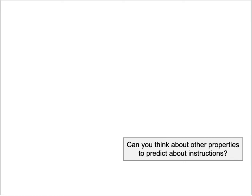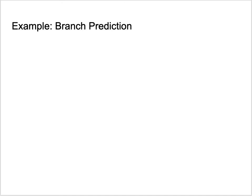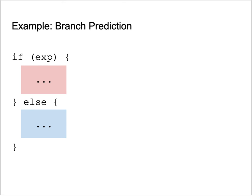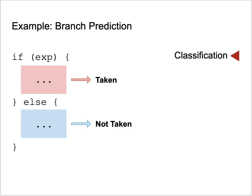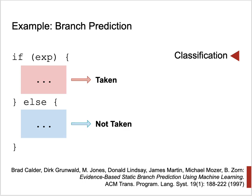Can you think about other properties we would like to predict about individual instructions? Something very common in compilers and hardware is to guess the outcome of a branch — that's called branch prediction. It is done a lot at the hardware level, but can also be done statically, such as when laying out code. A branch has two outcomes: if the condition is true the program flows to the then part, otherwise to the else part. The problem is guessing the most likely outcome. This can be modeled as a classification problem: tagging branches as taken or not taken. Brad Calder provides a machine learning model that labels branches this way.